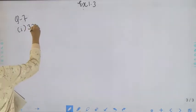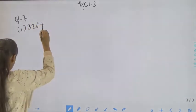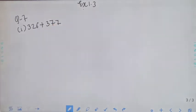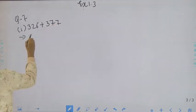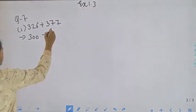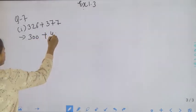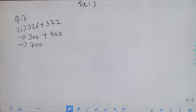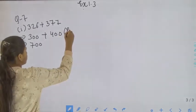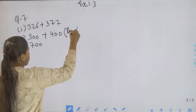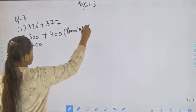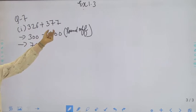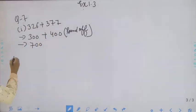326 plus 377 — students, round off: 326 will be rounded to 300 and 377 will be rounded to 400. So 326 and 377, nearest to the hundred round off.